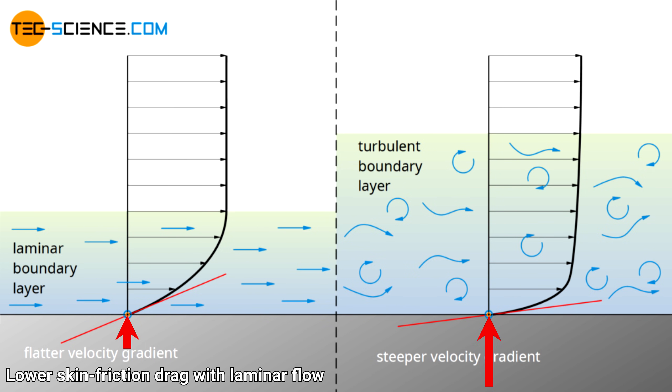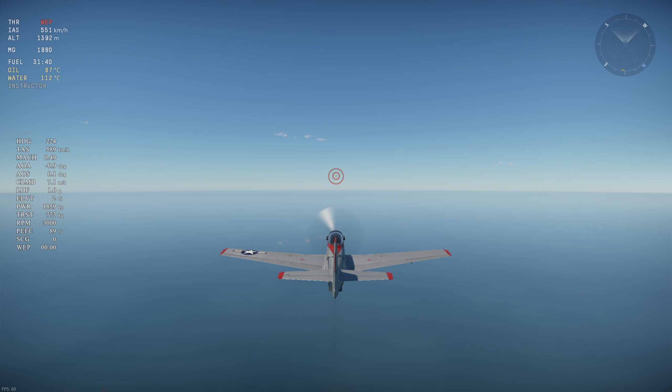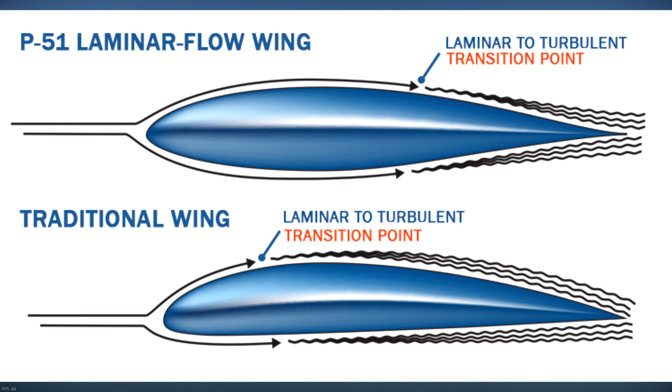One thing to keep in mind is that laminar flow is fragile. It can easily be tripped into going turbulent. In fact, for aircraft big enough to carry humans at decent speeds, it's not possible to have laminar flow over the entire wing, and the flow will transition to turbulent after traveling a certain portion of the wing, which we call the transition point.